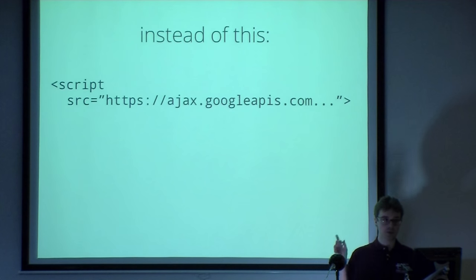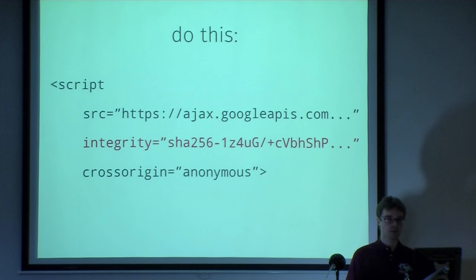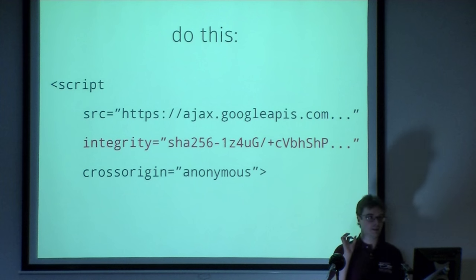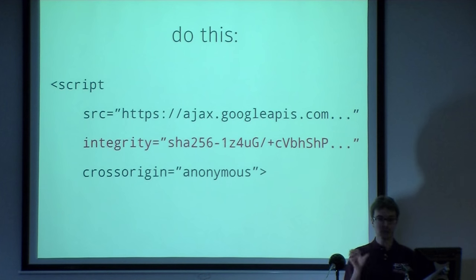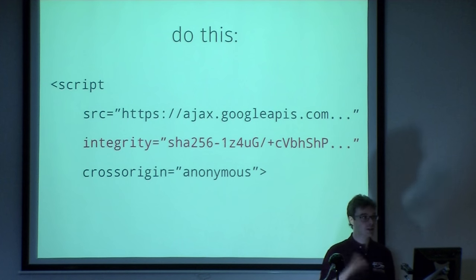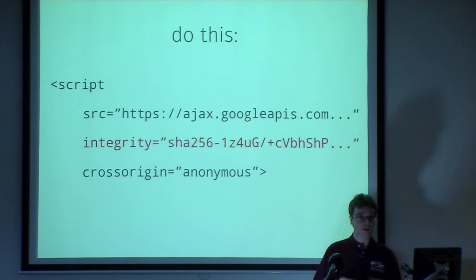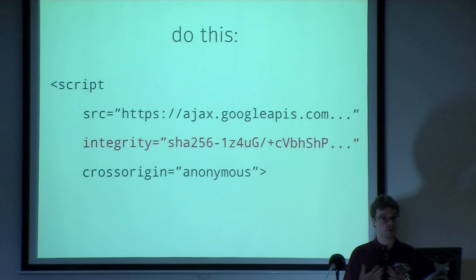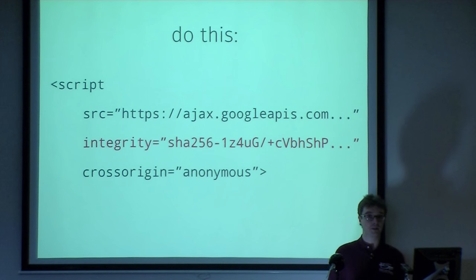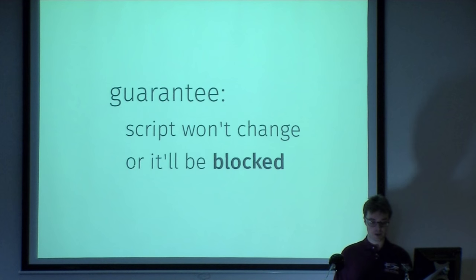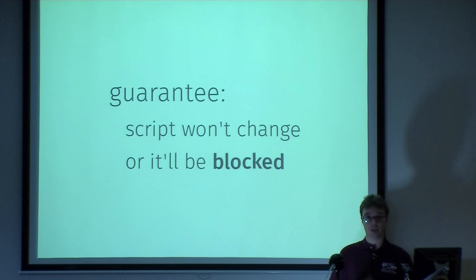There's a simple solution. Instead of just including the script, you add the hash of the file that you expect to load. Here we have a SHA-256 of the version of jQuery we're trying to load. That's basically telling the browser not to load this if it doesn't match this hash. That's exactly the guarantee that browsers supporting sub-resource integrity will give you — they will block the page if the hash doesn't match.